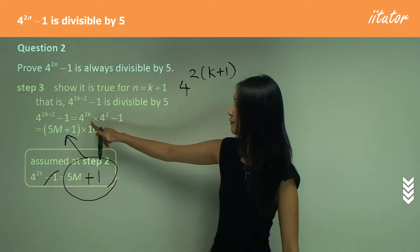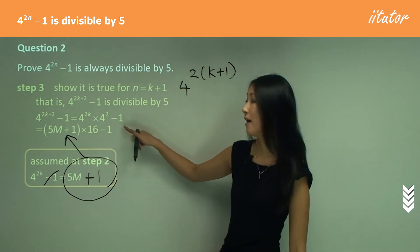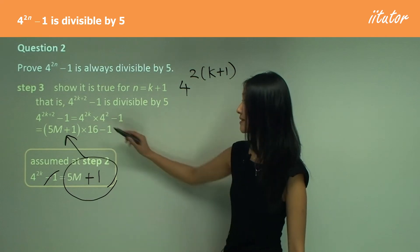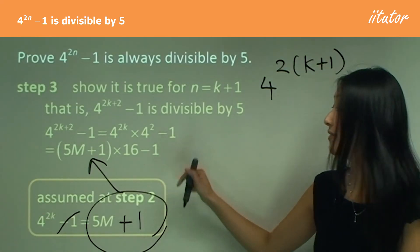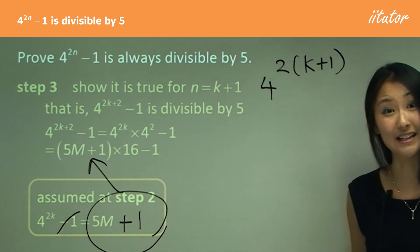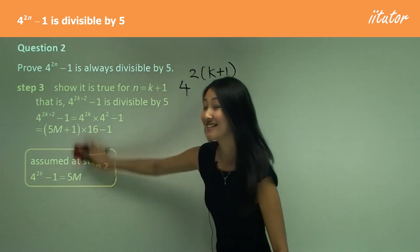Now I don't want you to go, oh, that's 4 to the power of 2k minus 1 and substitute that whole thing for 5m, because can you see how there's a multiply there? So we can't just use that, right? And that's why I'm actually changing this to substitute 5m plus 1 into there. And now I just need to expand.